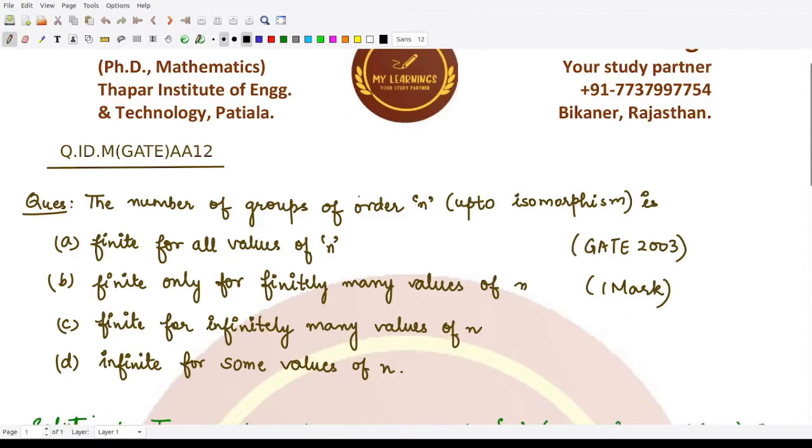Here the question is: we need to find whether the number of groups having order n up to isomorphism. Suppose we have group G1, we have group G2, we have group G3, and so on. We have group Gn and so on, correct? All of them have order n, right?